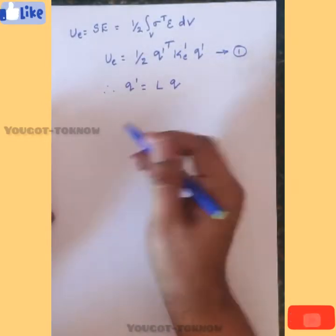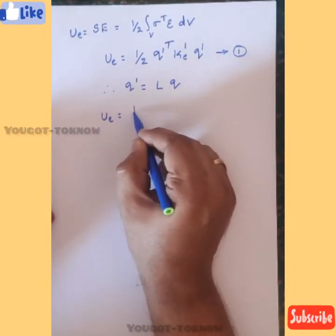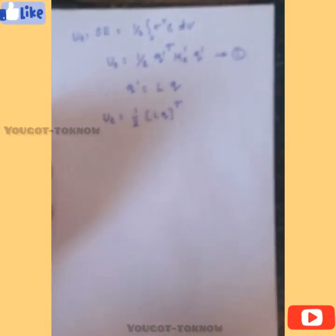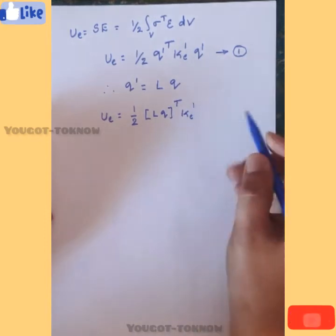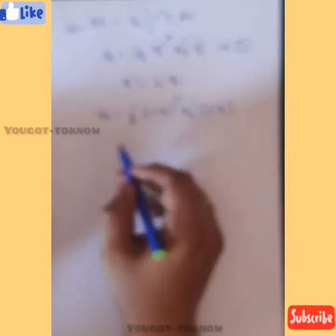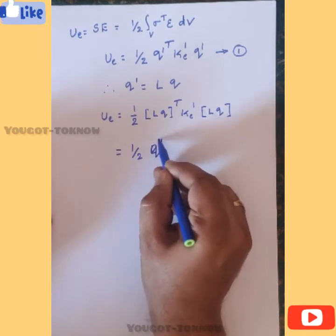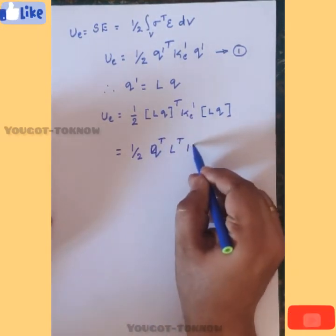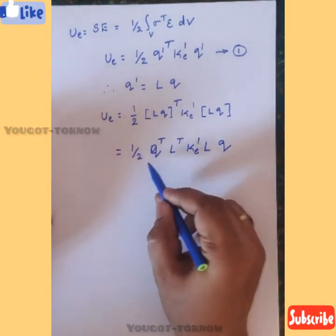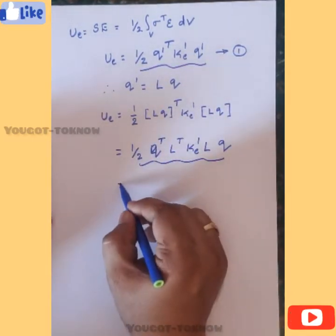After substitution, Ue becomes (1/2) times (L*q)_transpose times Ke_dash times (L*q). Simplifying, this becomes (1/2) * q_transpose * L_transpose * Ke_dash * L * q. If you observe this, it looks like the same format (1/2) * q_transpose * K * q, where the stiffness is now expressed in global coordinates.